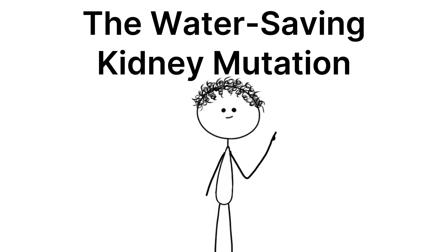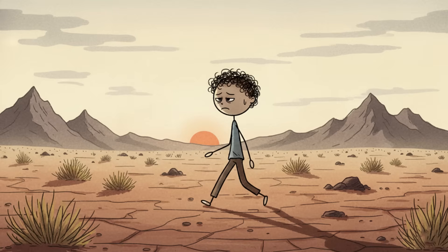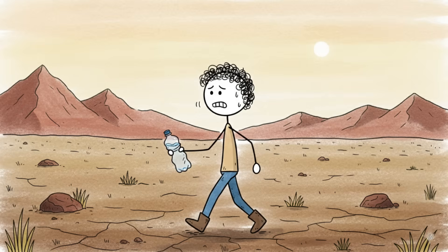Number 1: The Water-Saving Kidney Mutation. Picture yourself crossing an arid, unforgiving plain. Water is the most precious resource, and your survival hinges on your body's ability to conserve every drop.